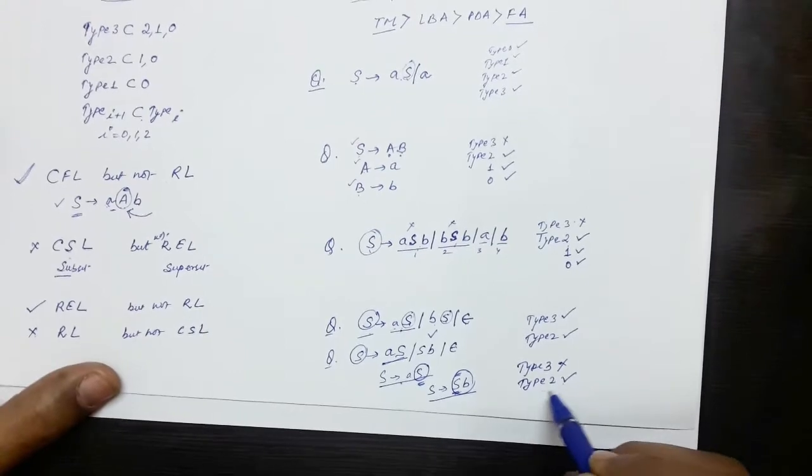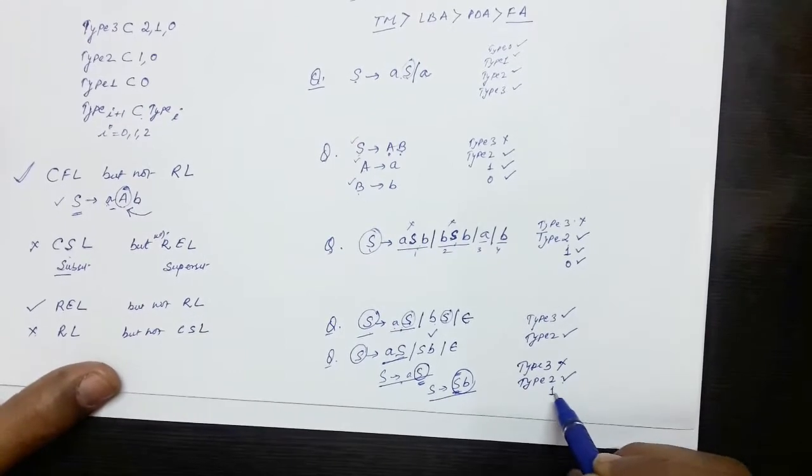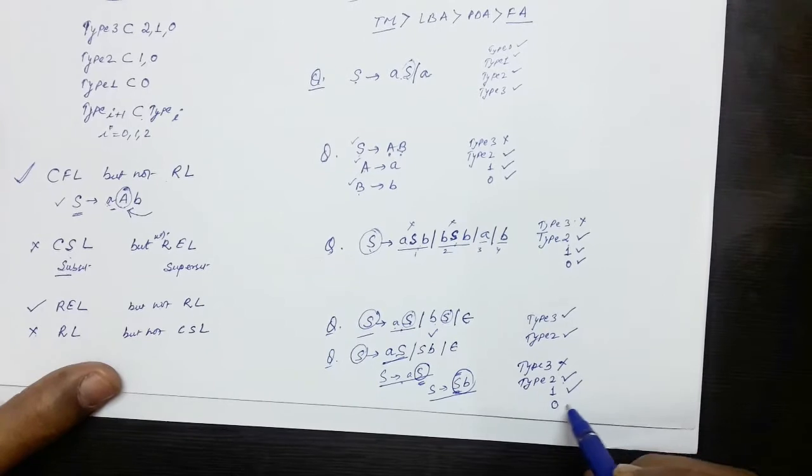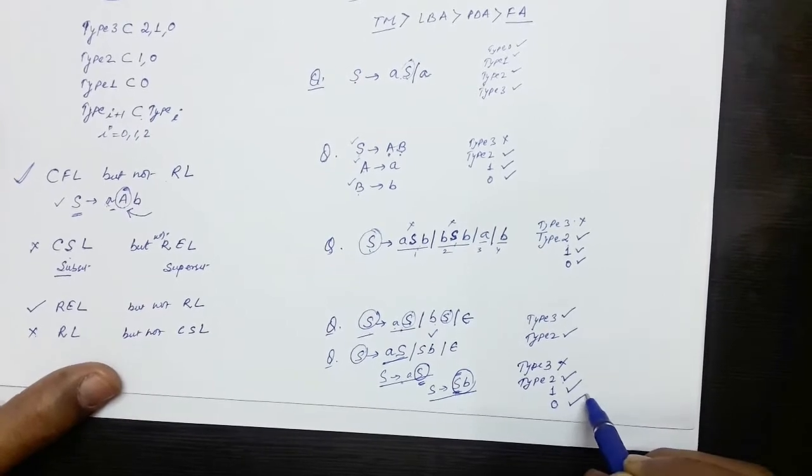It is Type 2, obviously it will be Type 1, and since it is Type 1, obviously it is Type 0.